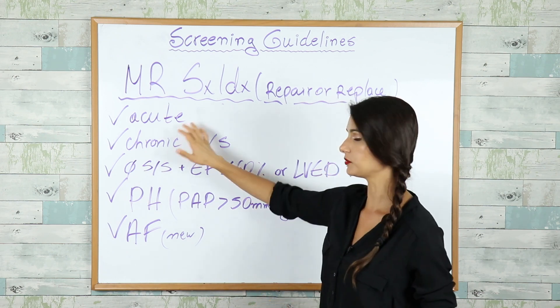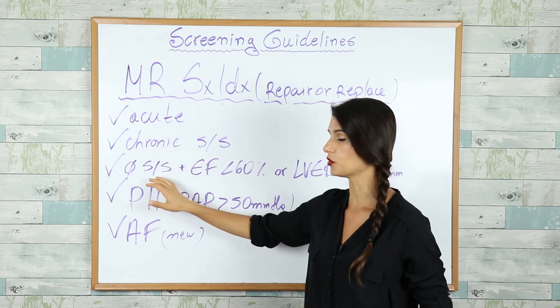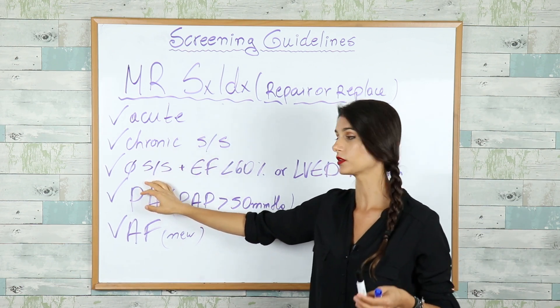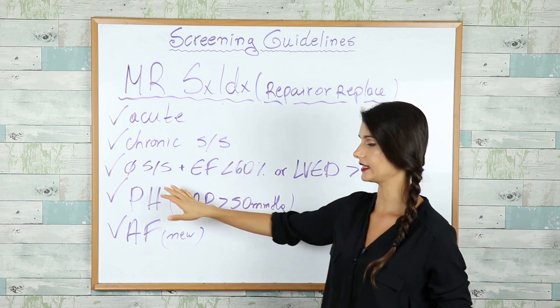If you have acute MR, if you have chronic mitral regurgitation with symptoms, if you don't have symptoms but your ejection fraction is less than 60%, or the patient is asymptomatic